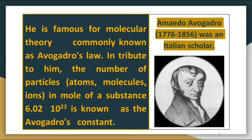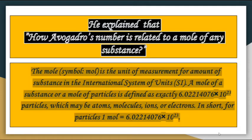Avogadro was an Italian scholar who lived from 1776 to 1856. He is famous for his molecular theory, commonly known as Avogadro's law. In tribute to him, the number of particles — atoms, molecules, or ions — in one mole of a substance, which is 6.022 × 10²³, is known as Avogadro's constant or Avogadro's number.